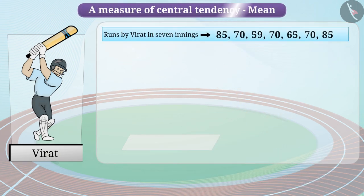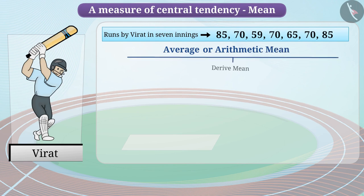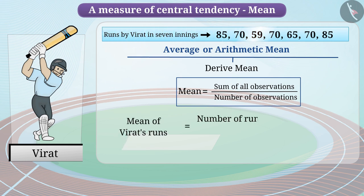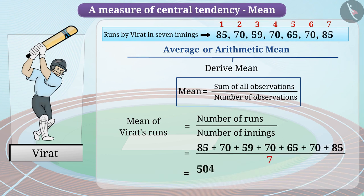In general terms, mean is referred to as average, also known as arithmetic mean. To derive mean, you need to divide the sum of all observations by the number of observations. For Virat's innings, we add up all the runs and divide by the number of innings: 504 divided by 7 equals 72.